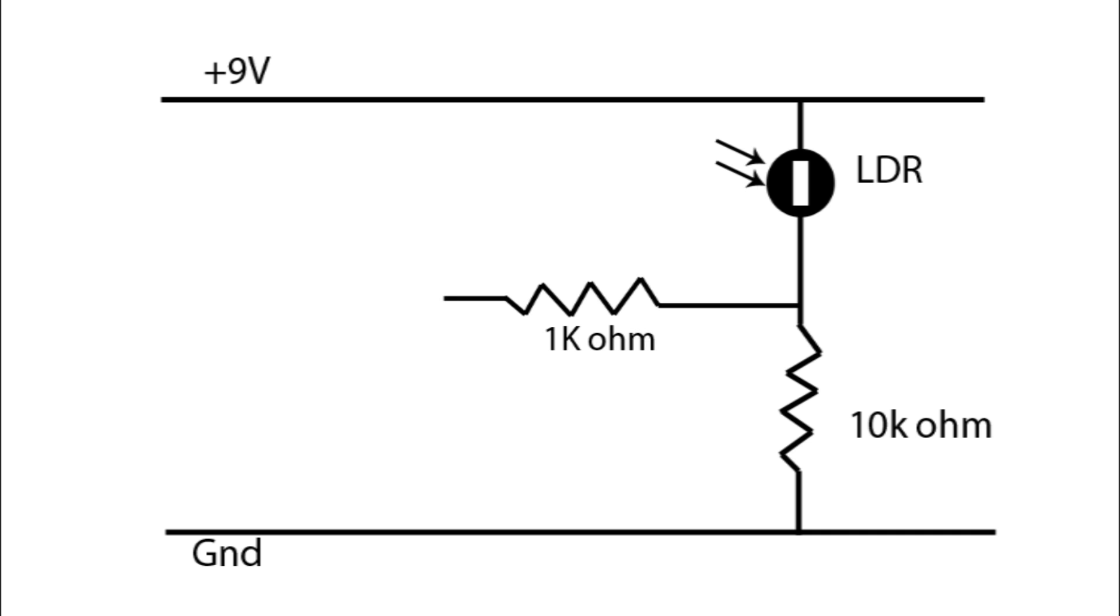Then going off to a 1k ohm resistor, then onto the BC548 NPN transistor to an LED and ground, and then a 10k ohm resistor tying one leg of the transistor to 9 volts.